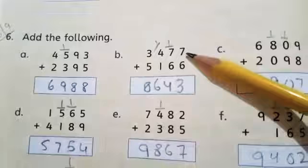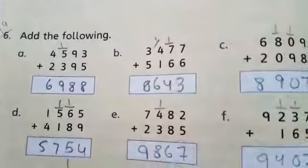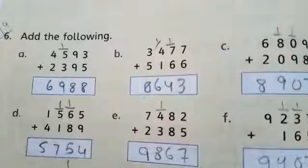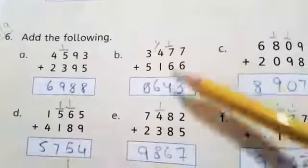7 plus 6. 7 in my mind, 6 in my finger. What comes after 7? 8, 9, 10, 11, 12, 13. So 3 in 1's place and 1 in 10's place.